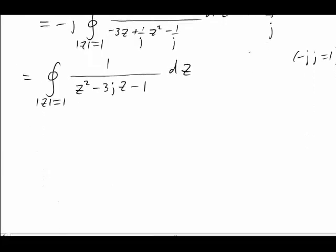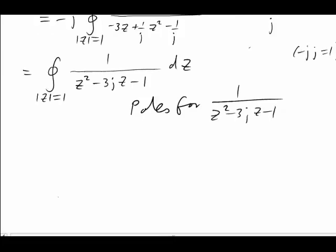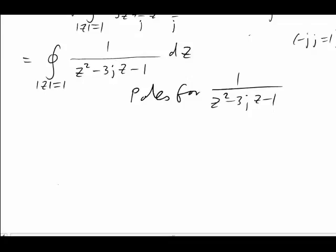We need to find the poles for the function 1 over z squared minus 3jz minus 1. I'm not worried that the coefficient of z there is imaginary. We can still use the quadratic formula.